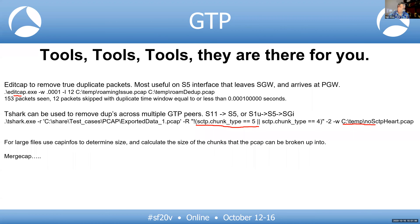Typical PCAP file sizes vary by use case. For massive MIMO scenarios, files can reach 2 GB. For typical problems, about 150 MB is common. For VoLTE troubleshooting, captures are much smaller — around 25 MB — which is why I prefer troubleshooting VoLTE over data.